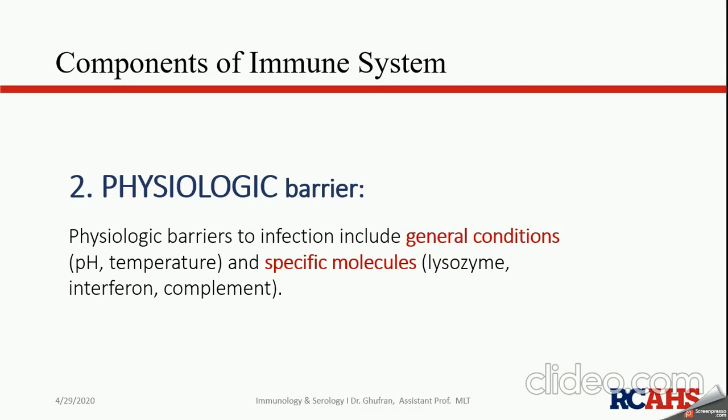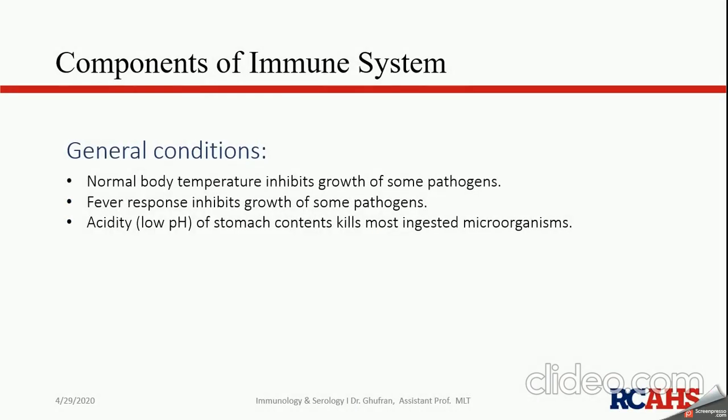The second barrier is the physiologic barrier, which includes general conditions like pH and temperature, and specific molecules such as lysozyme, interferon, and the complement system. The normal body temperature inhibits the growth of some pathogens. When we mount an immune response, the body raises its temperature, making conditions unfavorable for optimal microbial growth.